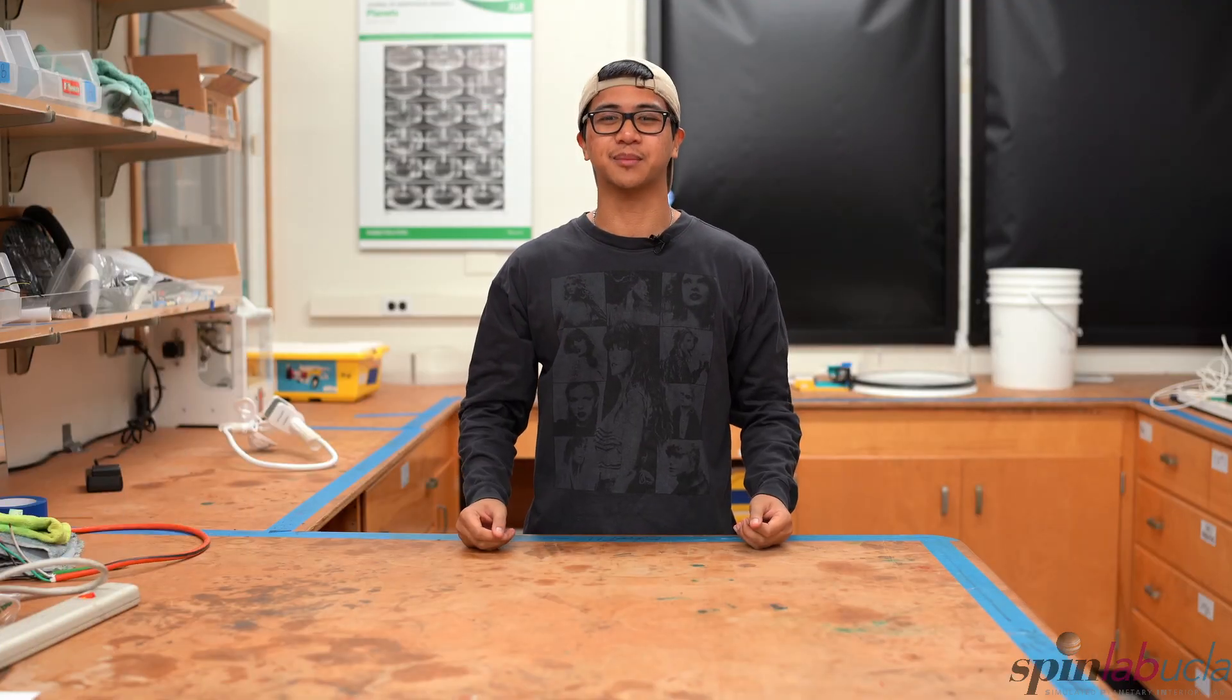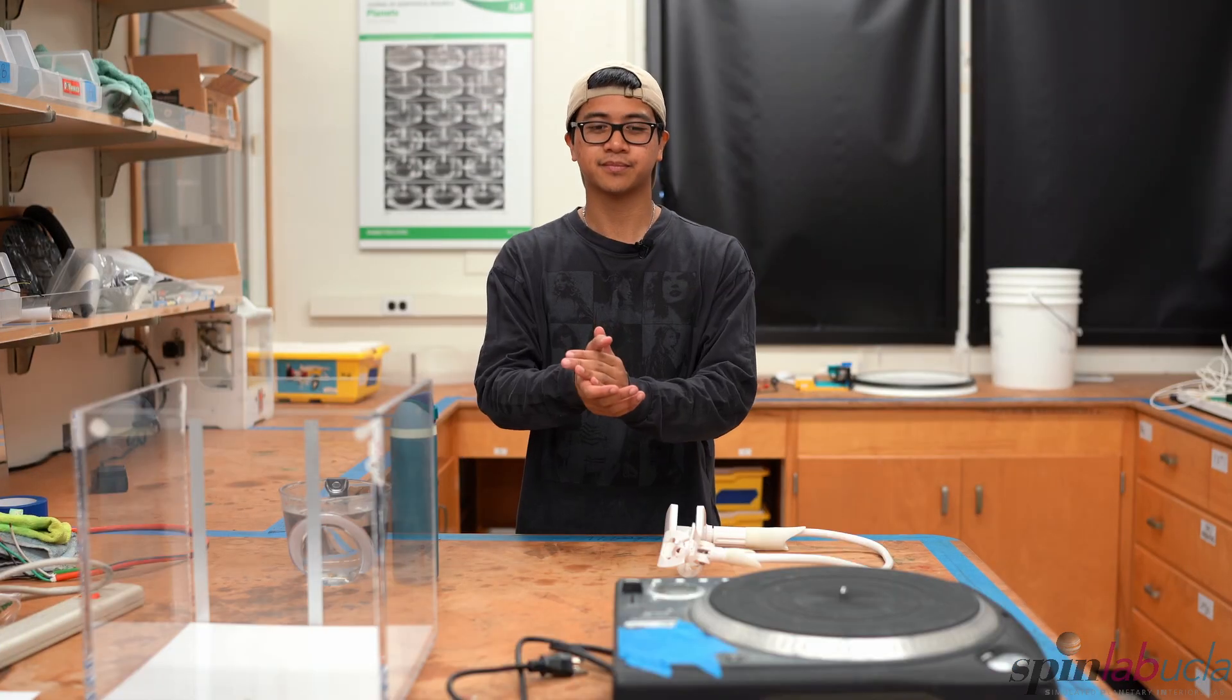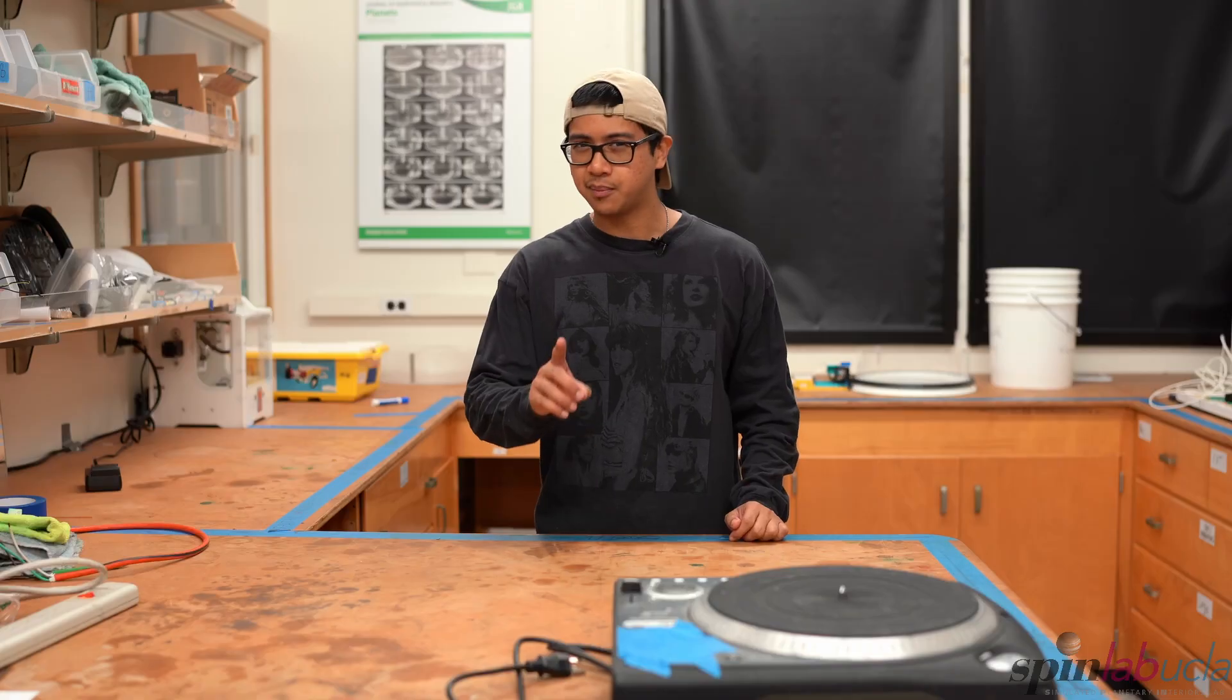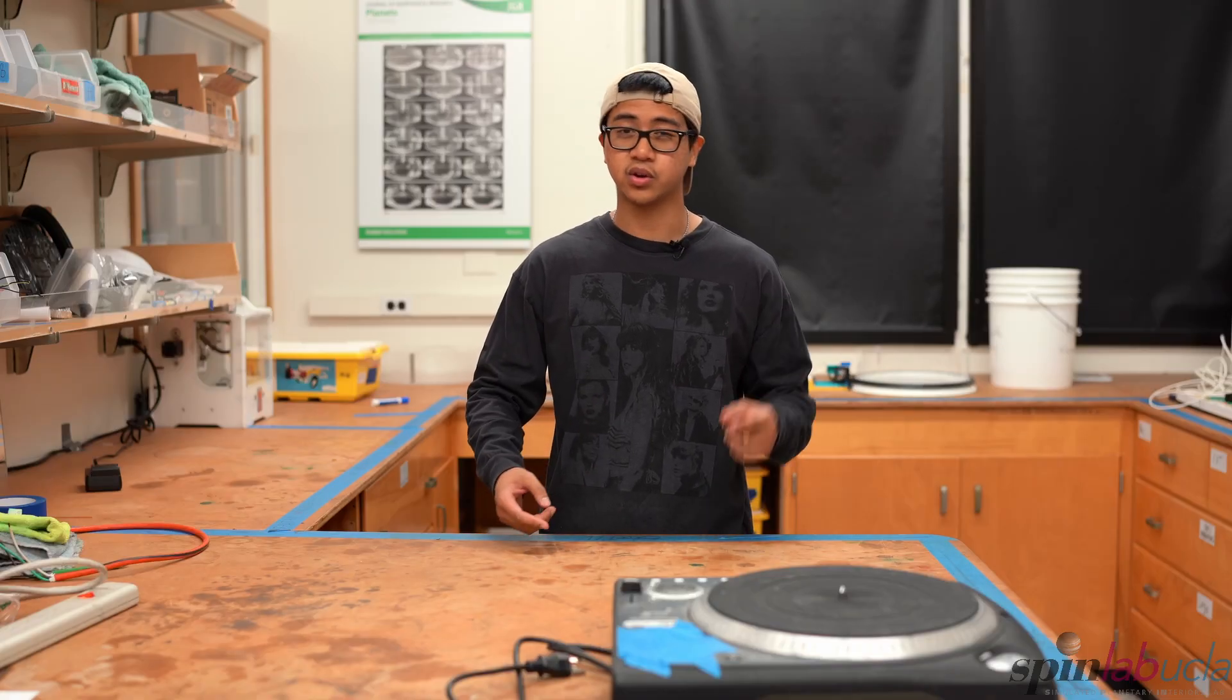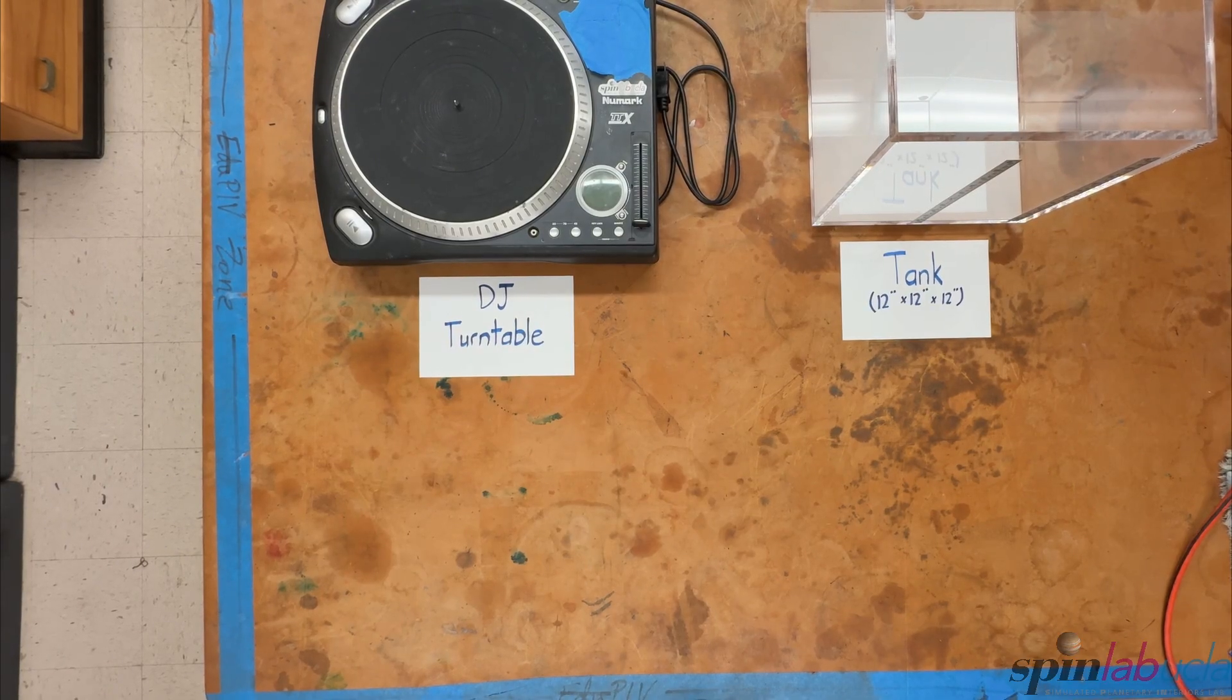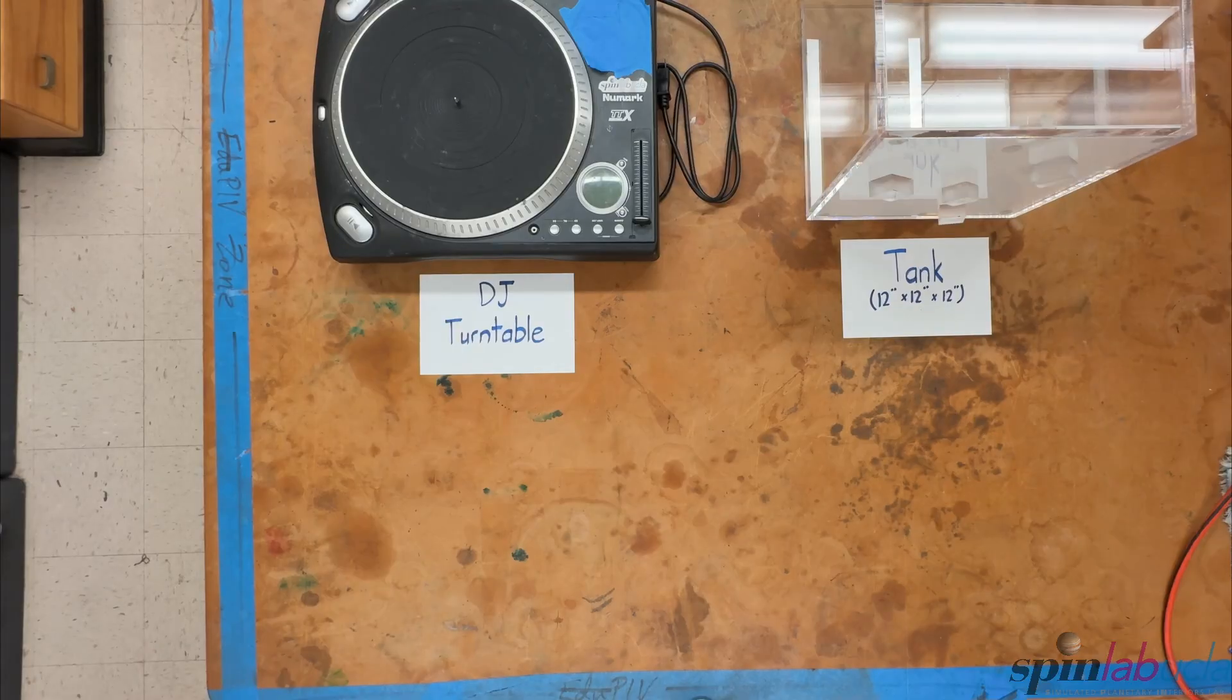First, let's look at our setup. We have a DJ turntable—make sure it's a DJ turntable specifically so you can change the rotation rate. Second, we have our tank, which is a square tank, 12 inches by 12 inches by 12 inches.